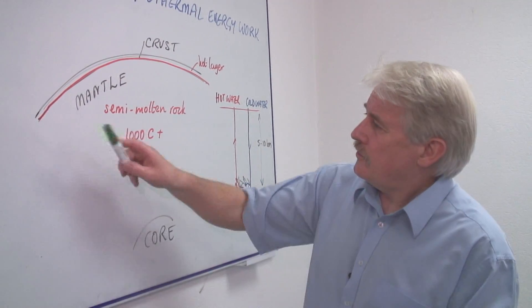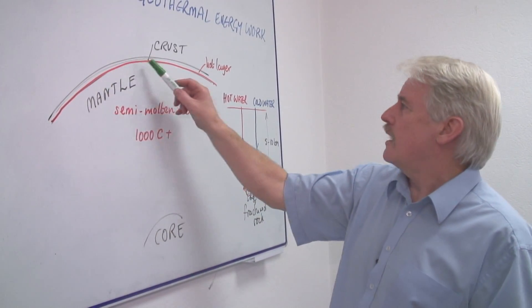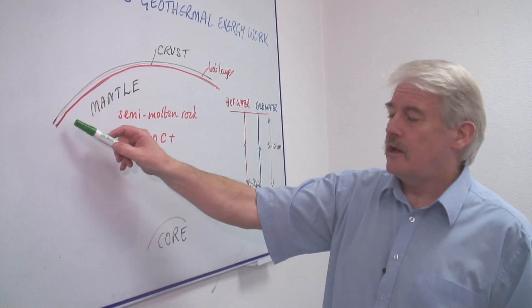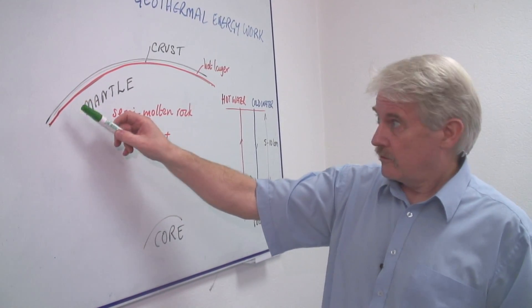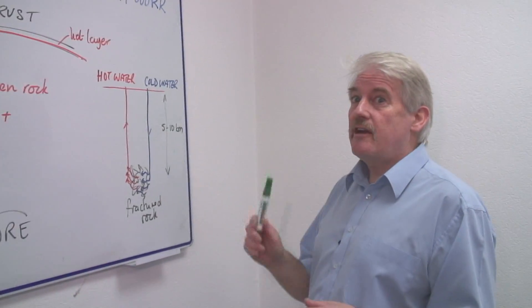And at the margin here just between the mantle and the crust you're going to have some very hot rock. Now we're not talking about going very far down into this. At the maximum 5 or 10 kilometers, the very maximum.